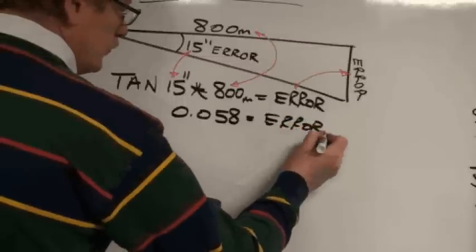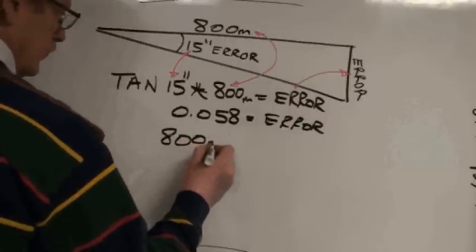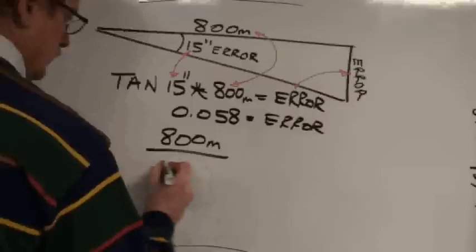Tangent of 15 seconds times 800 is 0.058. 0.058 is the error over the 800-meter distance.